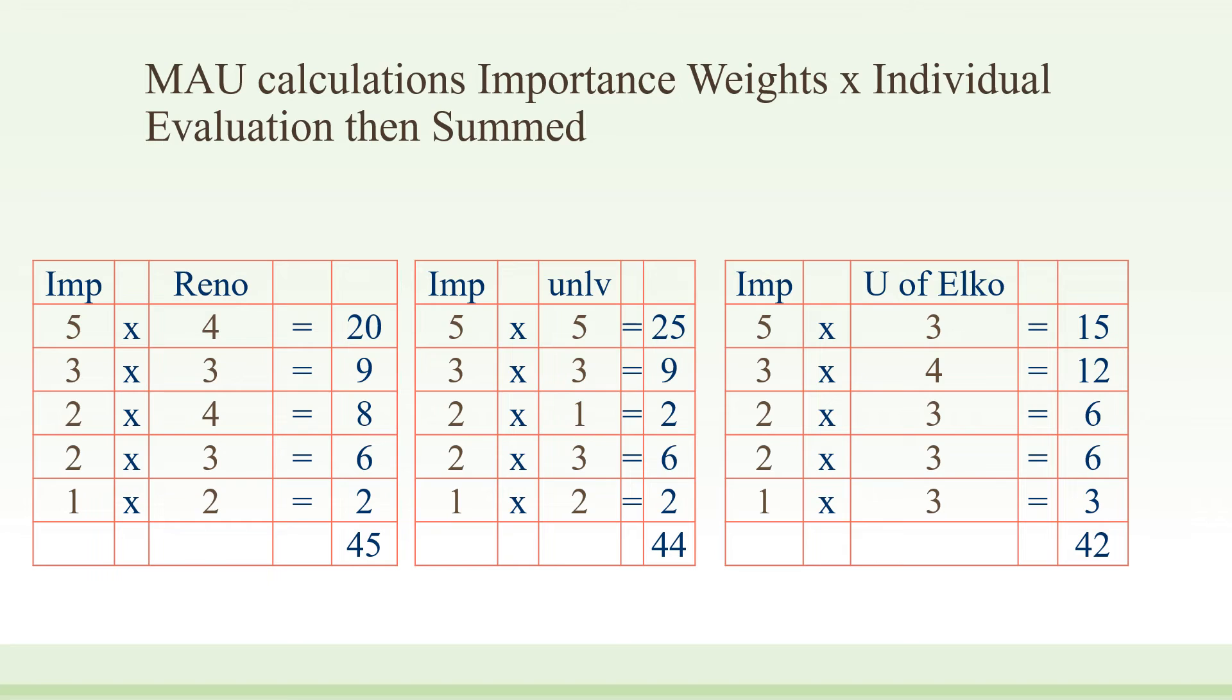That's one of the ways we can use this information. The other way is to look at it more diagnostically. If you take a look at UNLV, it becomes obvious that the biggest weakness UNLV has is on placement scores, where UNLV scored one, Reno scored four, and the University of Elko scored three. So UNLV is a distant third on career placement.